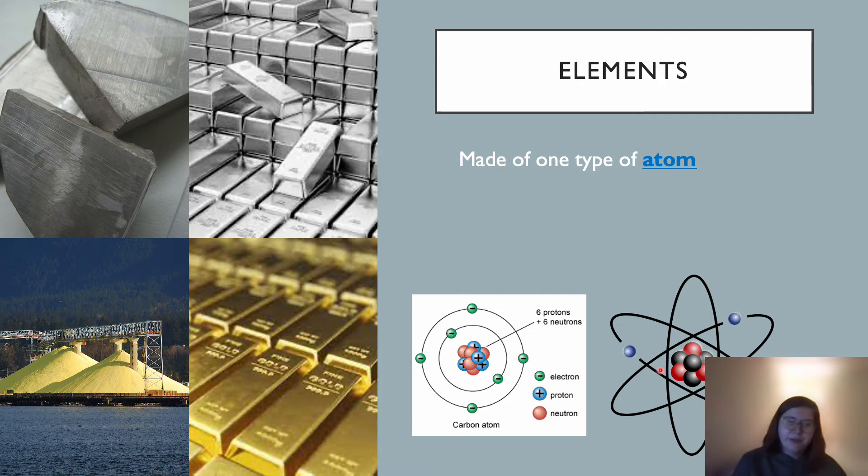Sometimes it's drawn like this, where the electron shells are more like overlapping ovals rather than circles. But either way, that's an atom. It's just one unit of an element. And all of the atoms in an element will look exactly the same and have exactly the same number of electrons, protons and neutrons.